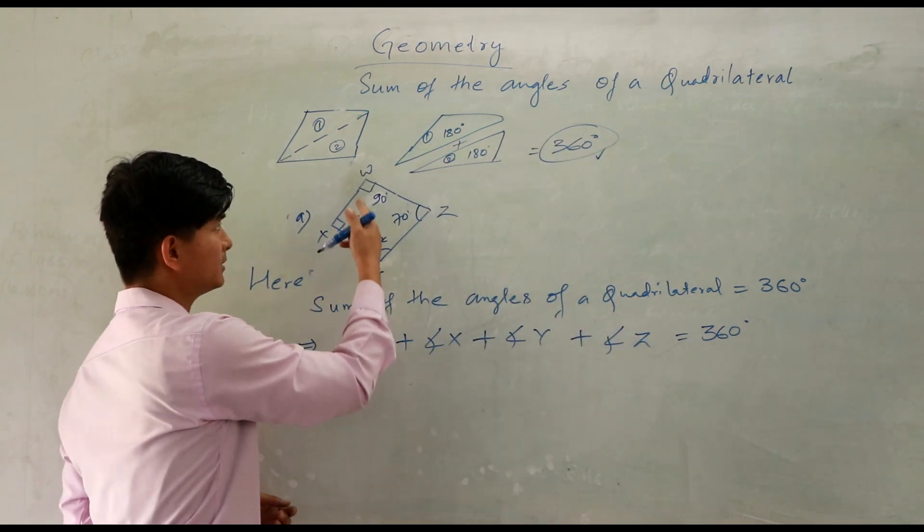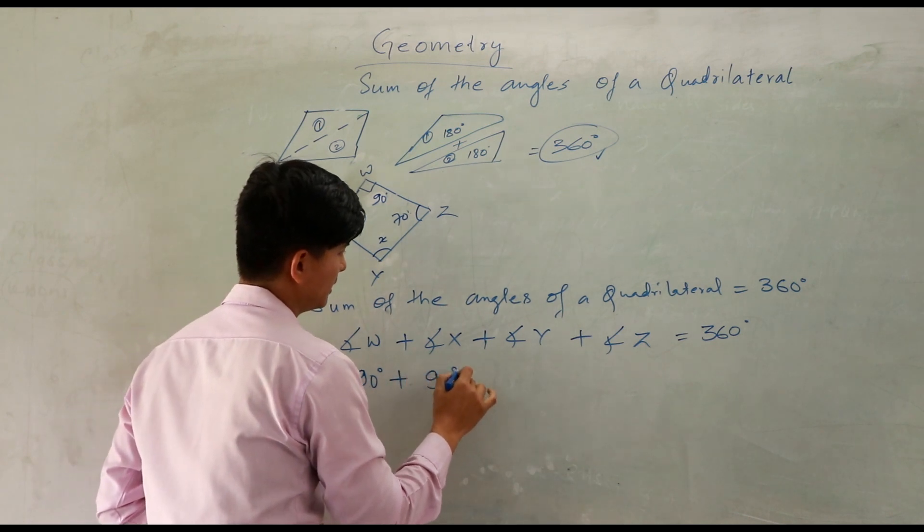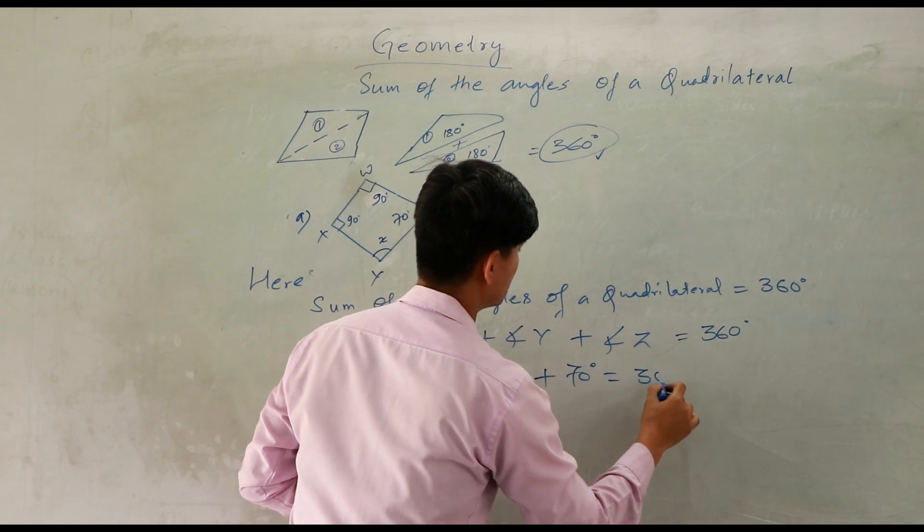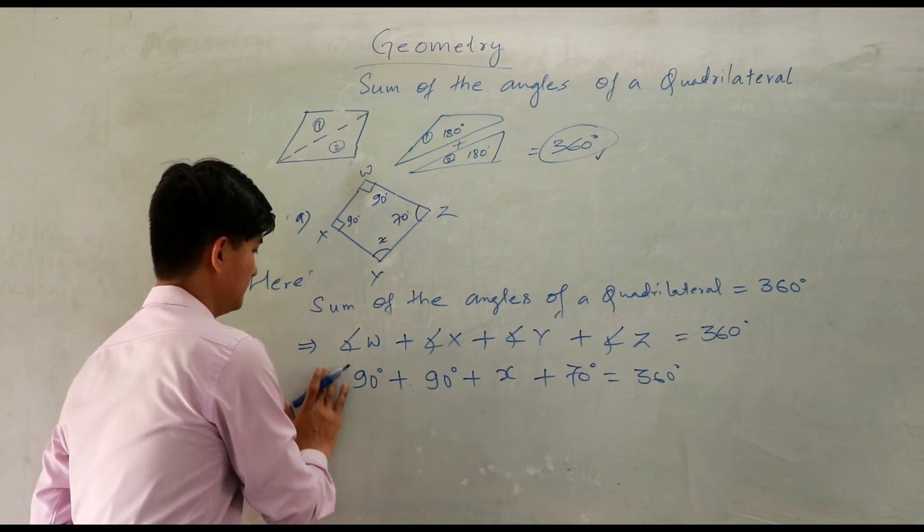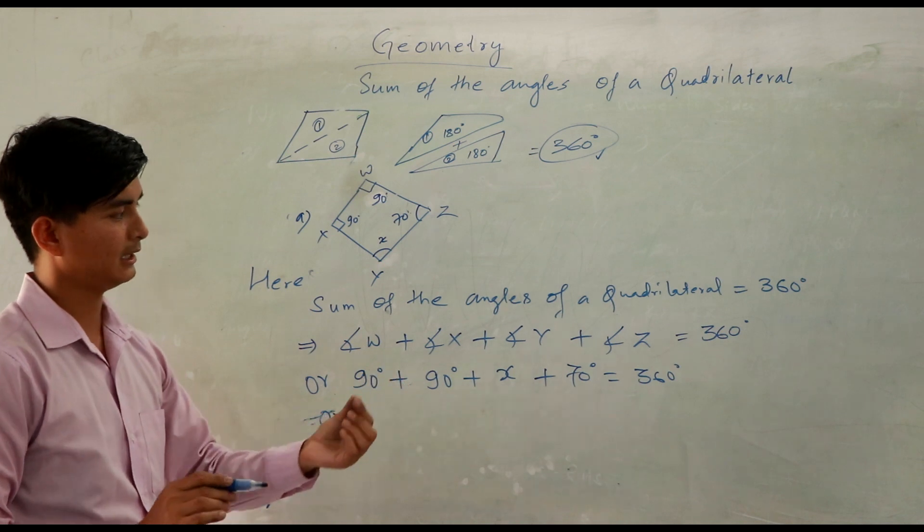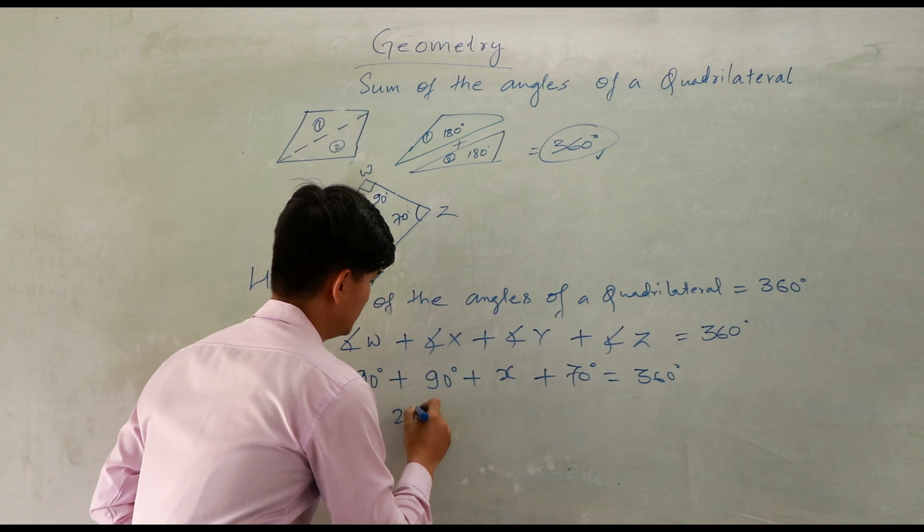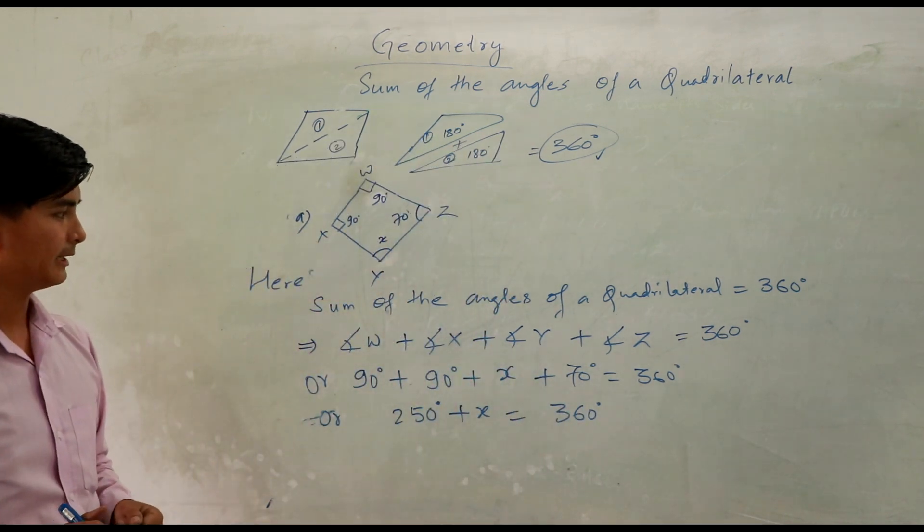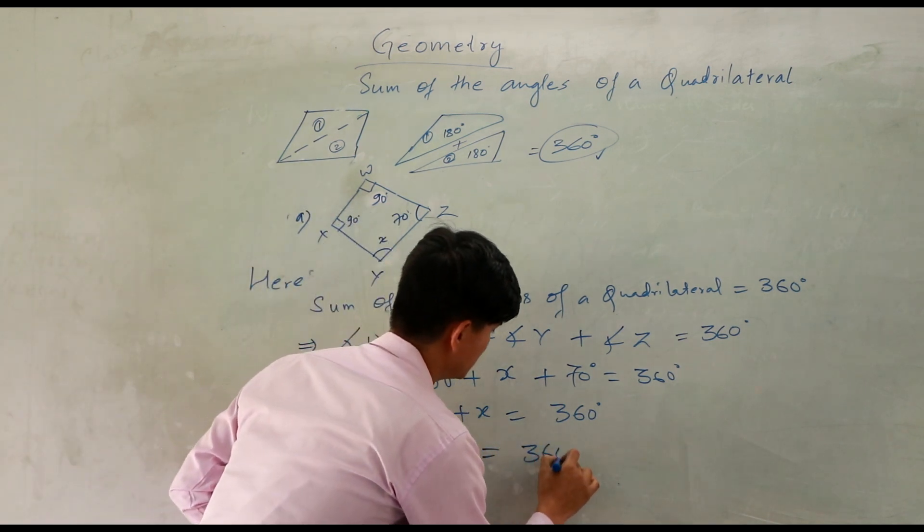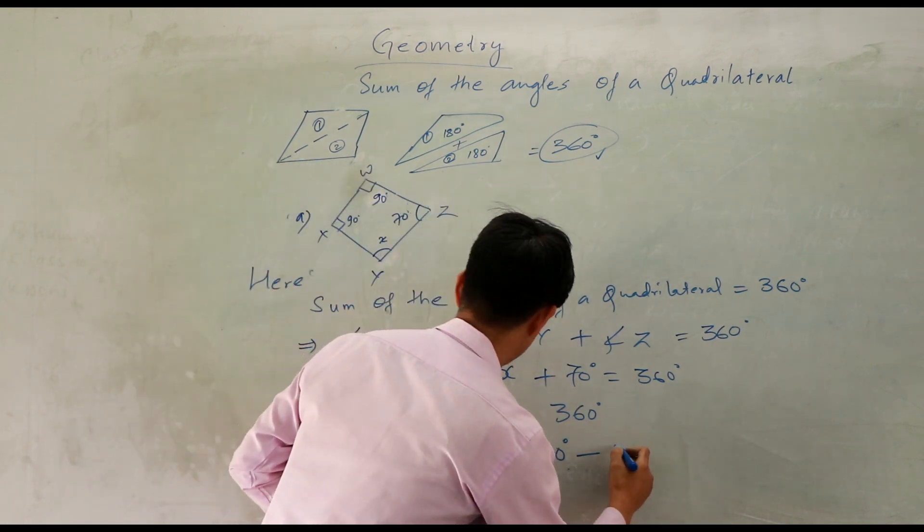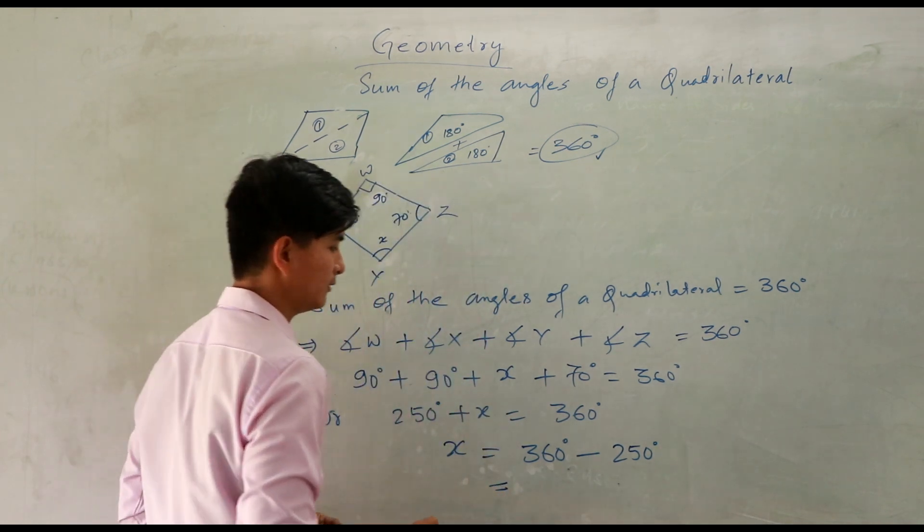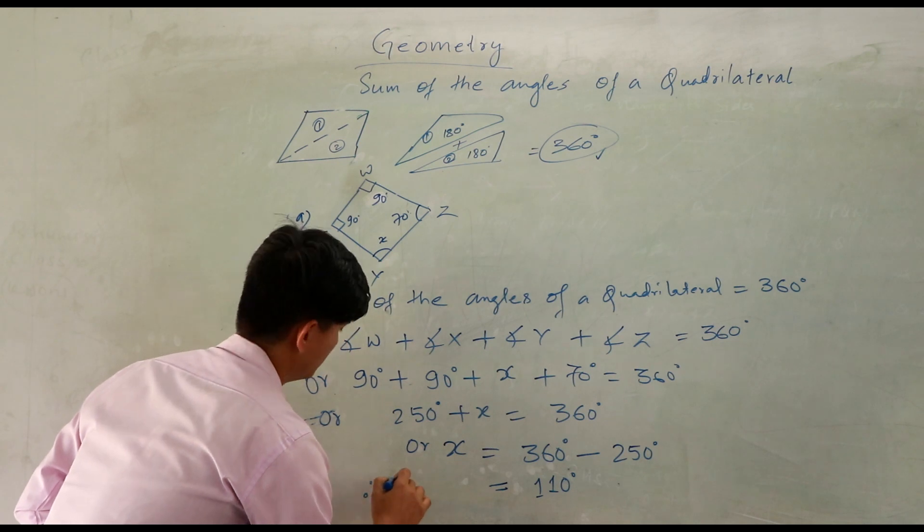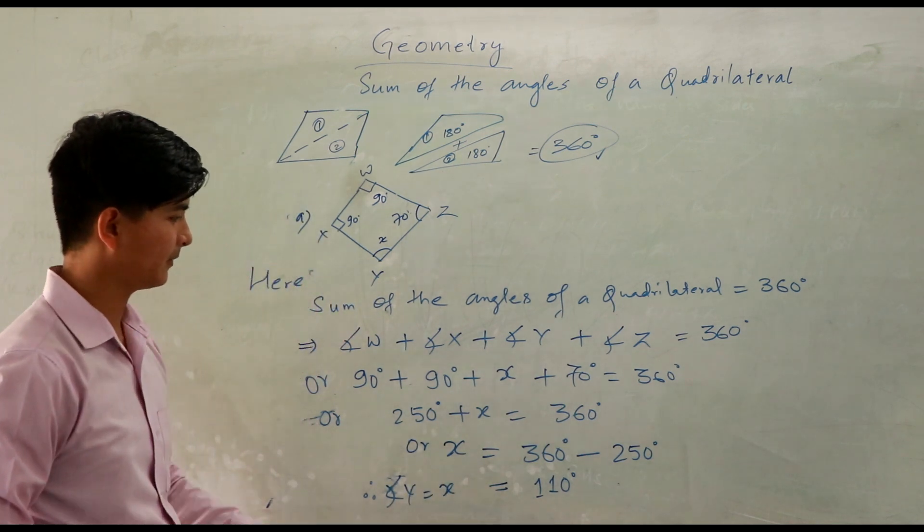Now, angle W is 90 degrees plus X, Y which is missing so write X, Z which is 70 degrees equals 360 degrees. Now calculate: 90 plus 70 is 160, 160 plus 90 is 250 degrees. After that, keep X alone: 360 minus 250. When we change signs, X equals 110 degrees.